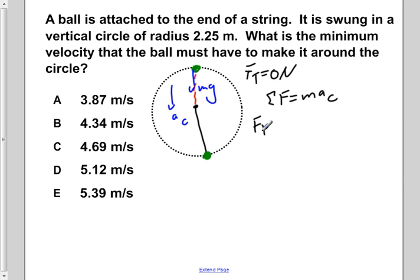We would find that force of tension plus mg is equal to ma centripetal. Now this is considering down to be the positive direction. So if we see that we can ignore the tension, we would see that mg is equal to ma centripetal.